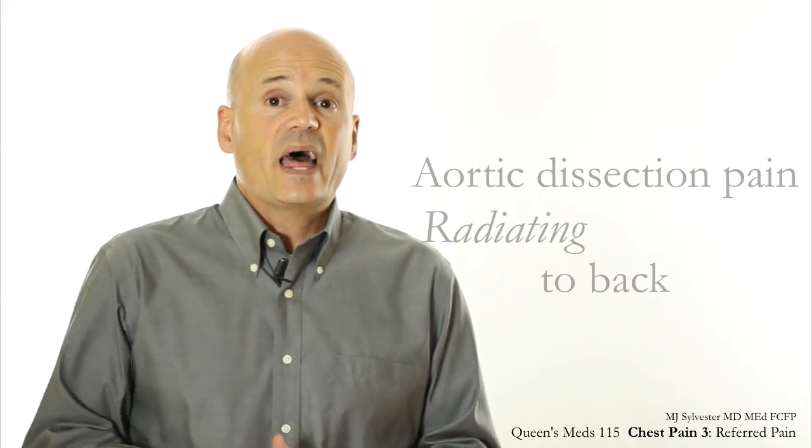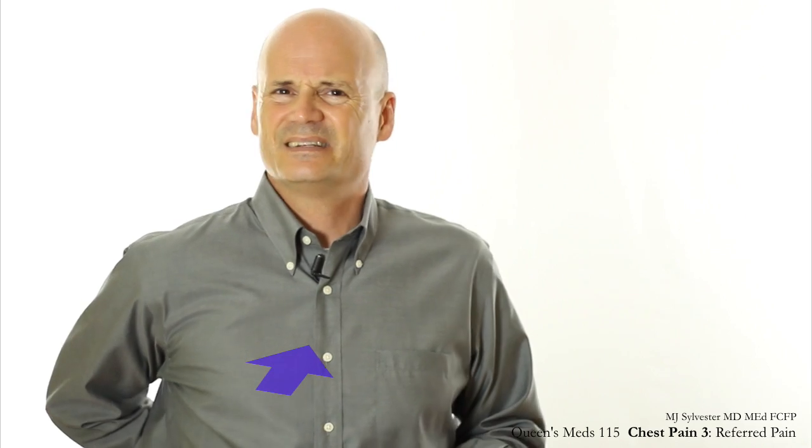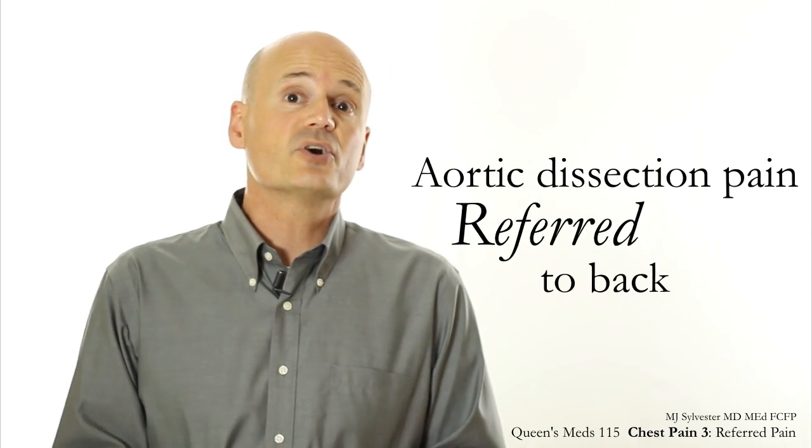Here's another for instance. If I had a dissecting aortic aneurysm and I was feeling central chest pain that was also going through to my upper back, well, we'd call that radiating pain. But if I was having a dissecting aortic aneurysm, and I came to you saying, I just have this pain in my upper back and it feels like something ripping, well, that would be referred pain.